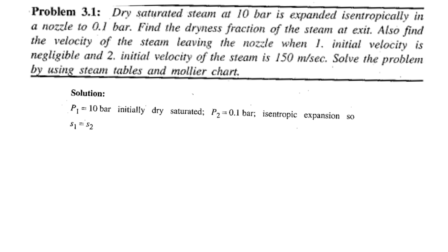We know that the pressure P1 is 10 bar and it is dry saturated. P2, the exit pressure is 0.1 bar, which means that the steam is expanding from 10 bar to 0.1 bar. And it is isentropic, so we can take the initial entropy and the final entropy, s1 = s2.